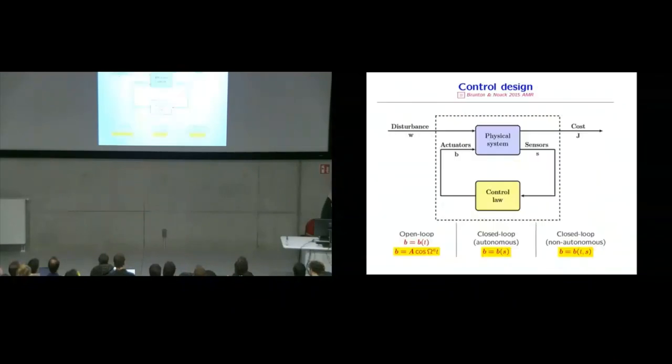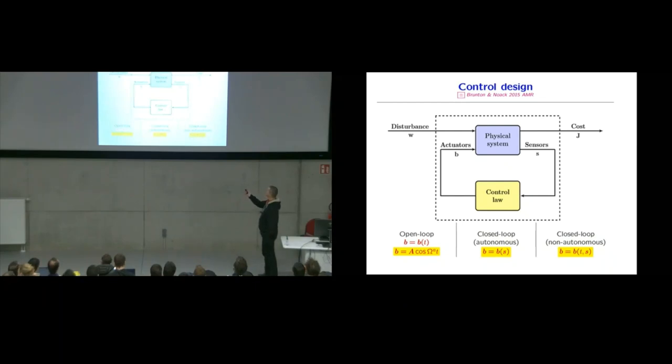At the end, you will always have a dynamical system. So your plant, you want to reduce the cost. For instance, the drag. You have some perturbations into the physical system. So this is called real world conditions. And you never know the full flow state. You only have some sensors. And you have to use the sensor knowledge to build a controller. And the controller drives the actuators. And there are several possibilities now. You can do open loop forcing. Very famous is periodic forcing. This is very frequently used. You can do closed loop control with sensor feedback. Or you can do a combination of both.